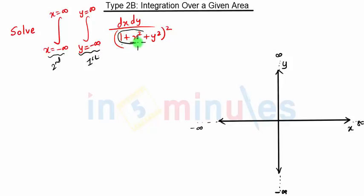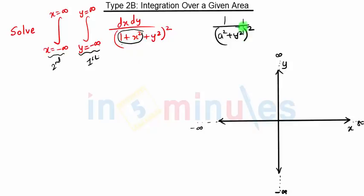Now we have to integrate first with respect to y, so x will remain constant — this term is constant. This equation is of the form 1 upon (a² + y²)², where a is constant. In this case, a is (1 + x²). If we did not have the square term, this would be a simple integration — simply tan inverse of y by a. But the square makes this integration very difficult.